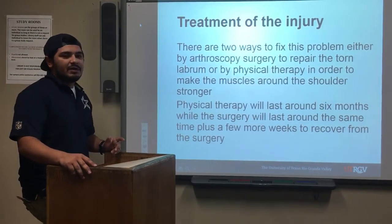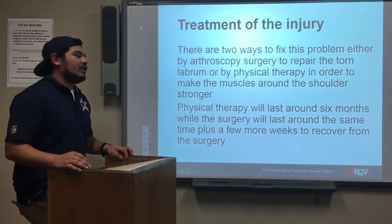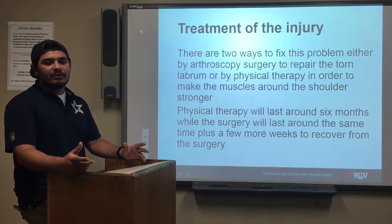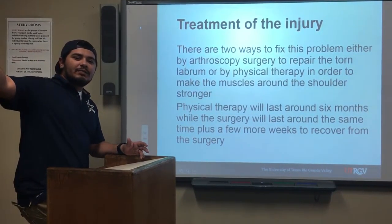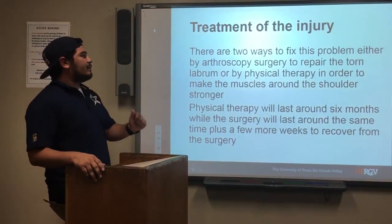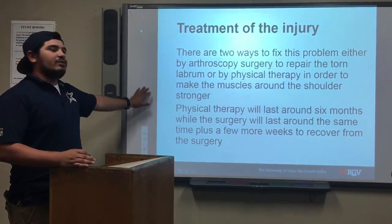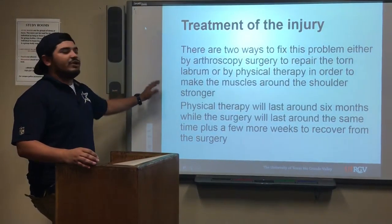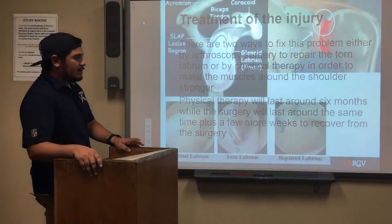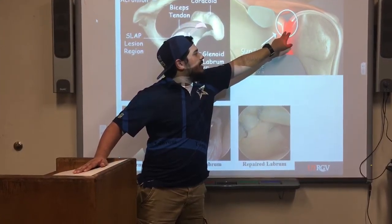There are two ways to treat a SLAP tear: arthroscopic surgery or physical therapy. Physical therapy lasts around six months, while surgery lasts around the same time plus a couple of extra weeks to recover. For rehab, one exercise is horizontal abduction — you lay on a therapy bed and lift a two to five pound dumbbell up and bring it back down. Another rehab exercise involves placing a tennis ball or baseball against the wall and doing little circles until fatigued, to strengthen the muscles in your shoulder.